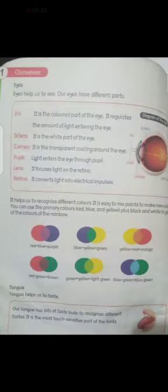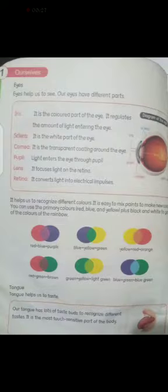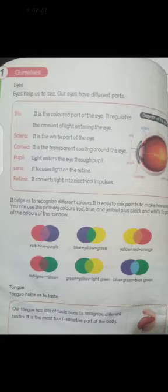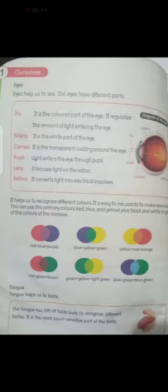Eyes is an important part of our body. Eyes help us to see different things. Okay, let's start our reading. Eyes help us to see; our eyes have different parts like iris, sclera, cornea, pupil, lens and retina.